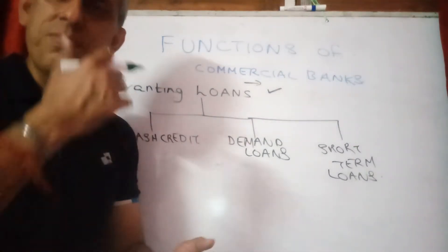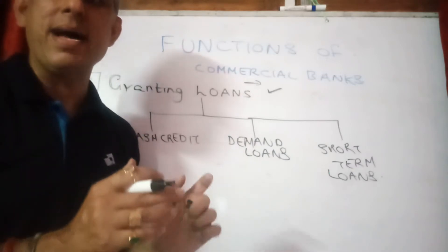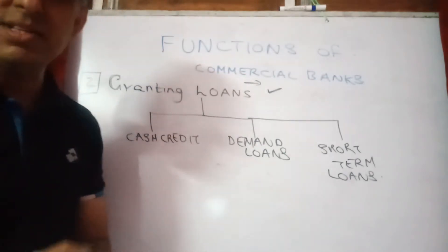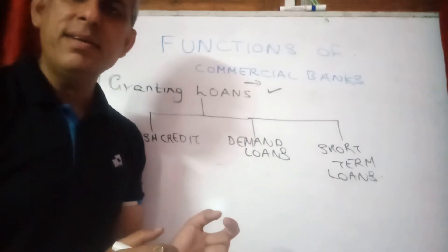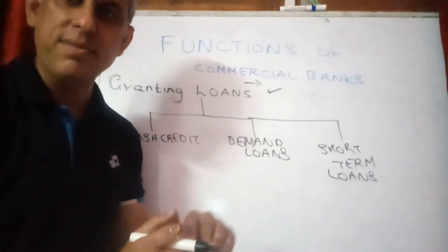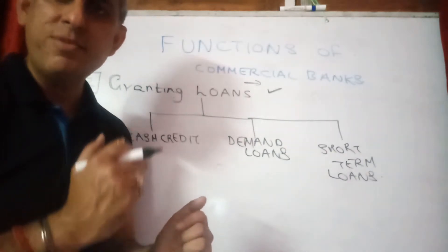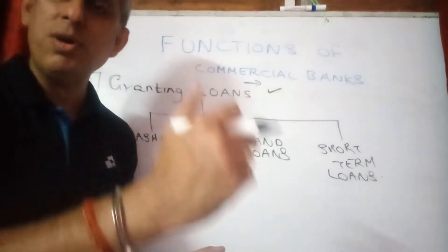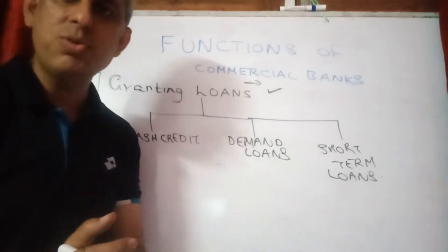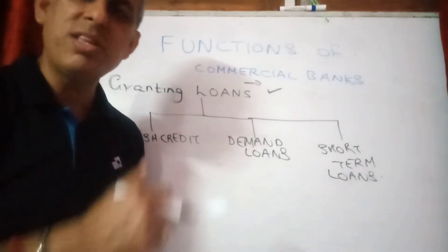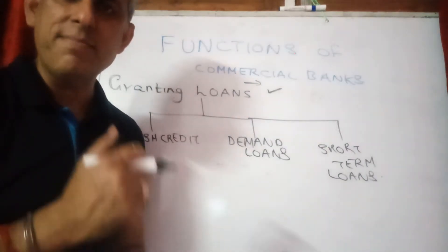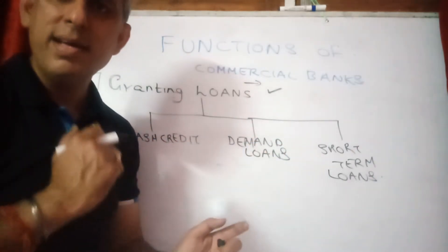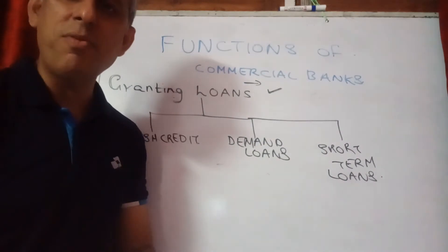Now, the other function which makes a bank a commercial bank — or an entity which can be labeled as a bank in the strict sense of the word — is taking money from one side and rewarding interest, and on the other side, also allowing that money to be given to people, the public, or entities which require it, be it households or firms for various purposes. Naturally, they will charge interest against the same money they give out. That's what makes an entity a commercial bank — taking money and giving it to the public in the form of various facilities.